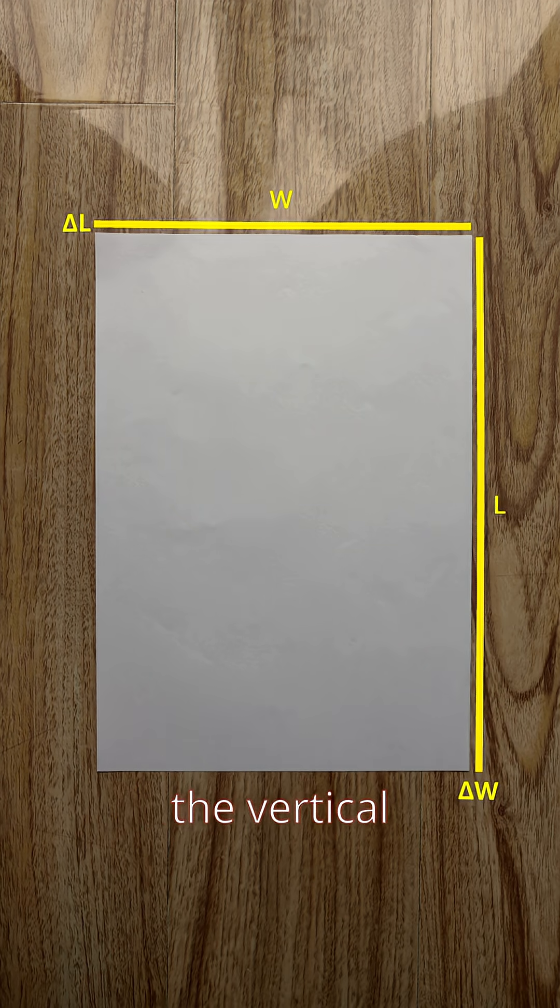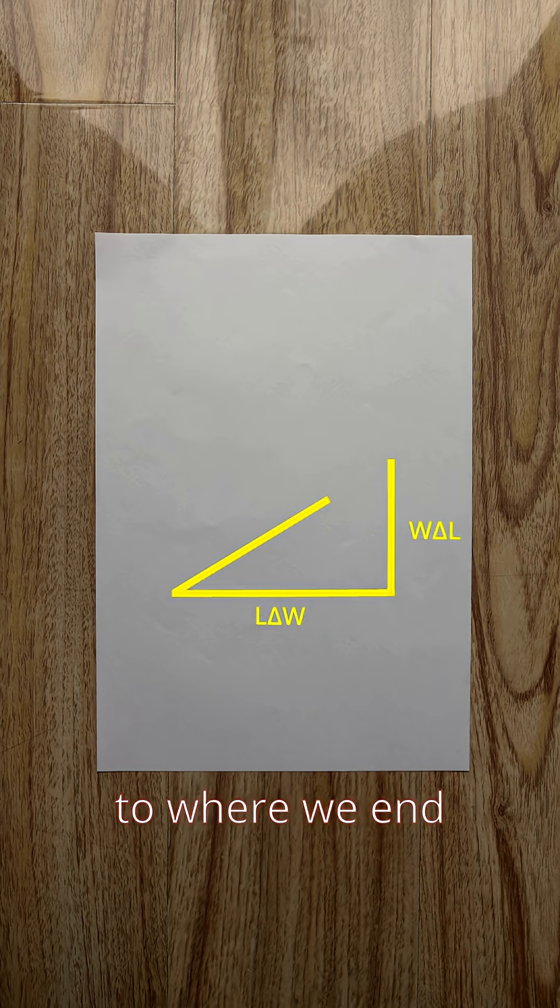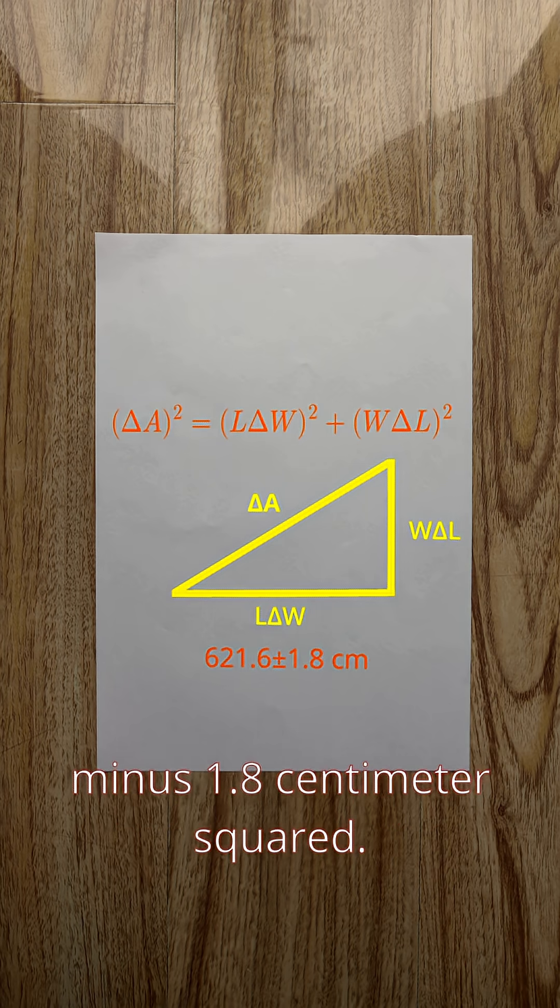Nope! You can imagine the vertical strip like moving on the xy plane in the x direction, and the horizontal strip like moving in the y direction. The line from where we started to where we end up is the hypotenuse, and that's where the Pythagorean theorem comes in, giving an area of 6.21.6 plus or minus 1.8cm squared.